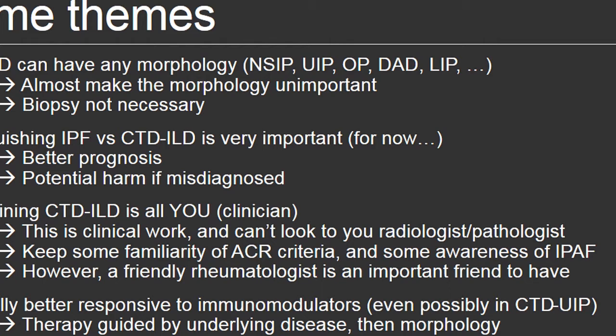Since it's getting late in the morning, I shuffled my slides a little bit and put, like, a newspaper headline — the themes I'm going to go through. Connective tissue disease-associated ILD can have really any morphology. NSIP is probably, across the board, the most common, but UIP as well, organizing pneumonia, diffuse alveolar damage that you see in ARDS, and lymphocytic interstitial pneumonia.